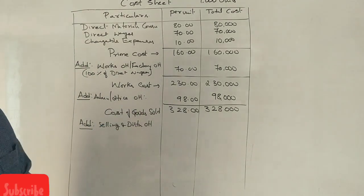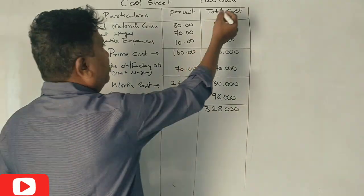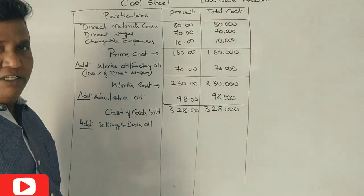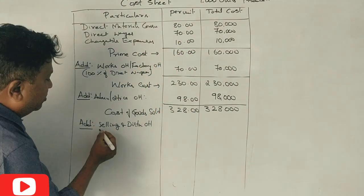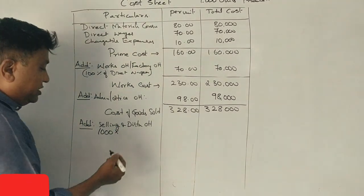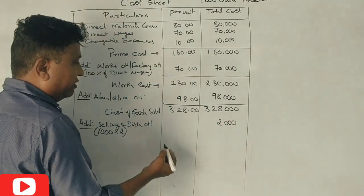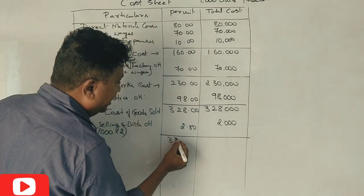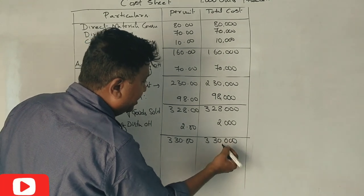Next, selling and distribution overhead is Rs. 2 per unit. For 1,000 units, that's Rs. 2,000. So total cost is Rs. 3,30,000, per unit Rs. 330.